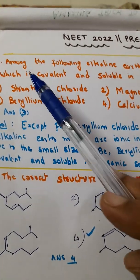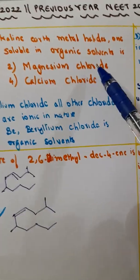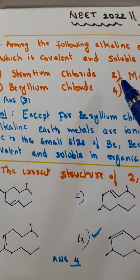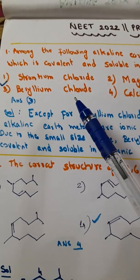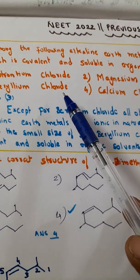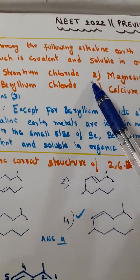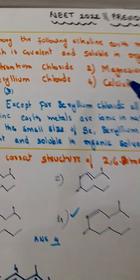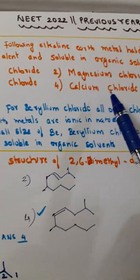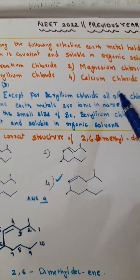The question is: among the following alkaline earth metal halides, which one is covalent and soluble in organic solvent? In the choices you have four alkaline earth metal halides. The options are strontium chloride, magnesium chloride, beryllium chloride, and calcium chloride.